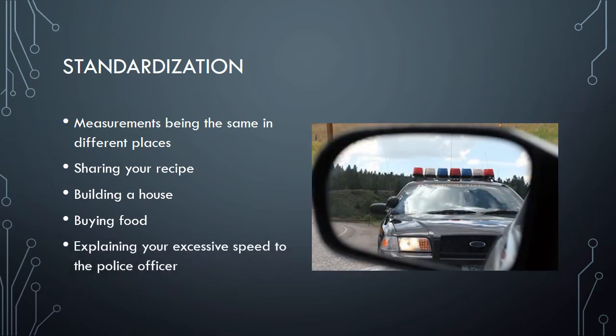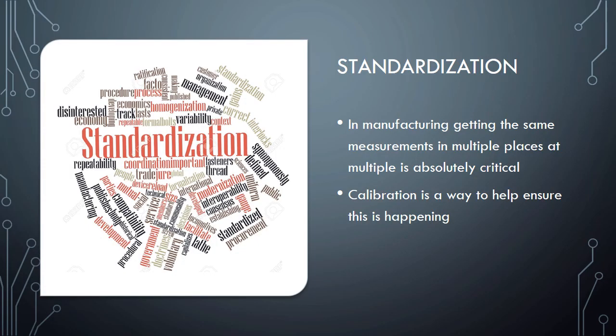Think about this one too - explaining your excessive speed to the police officer because your speedometer is reading wrong. So just some ideas of standardization to keep in mind as we talk about these calibration and measurement practices. Standardization is just a really huge thing when we look at the manufacturing world because it's really important they're getting the same measurements everywhere they go through their processes. They don't want to make a product in Des Moines and have it be a different product than the product that they make in West Virginia. Calibration is a way to help ensure that we're getting those standardized measurements in different places at different times.